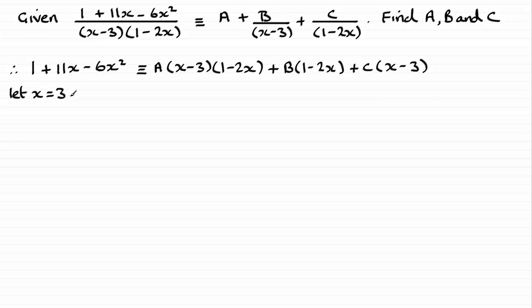And if we do that, we end up with 3 substituted in here. That'll give us 1 plus 33 minus 54. And that leaves me with minus 20. And if we substitute 3 into the right hand side here, this will be zero. So, this term goes. This last term will be zero. So, that goes. Just putting 3 in here is going to give me 1 minus 6. That's going to be negative 5b. Okay, minus 5b then. And if I divide both sides by minus 5, you can see that b turns out to be 4.